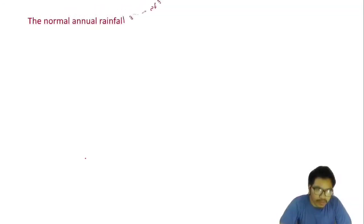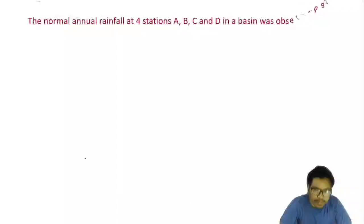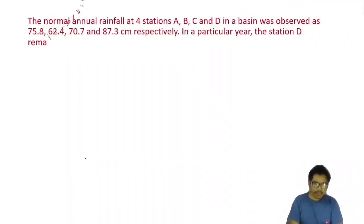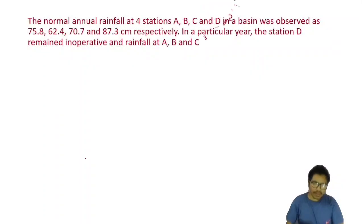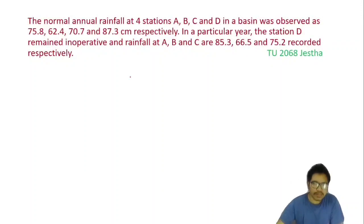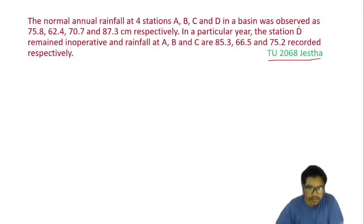The next question: the normal annual rainfall at four stations A, B, C and D in a basin was observed as 75.8, 62.4, 70.7 and 87.3 cm respectively. In a particular year, station D remained inoperative and rainfall at A, B and C were recorded as 55.3, 66.5 and 75.2 cm respectively. This was asked in a university exam in 2068. We have to find the missing rainfall at station D for that particular year.